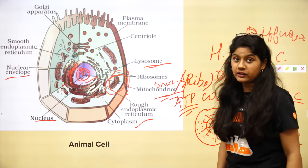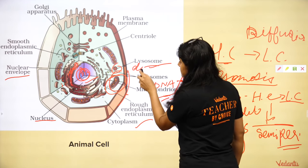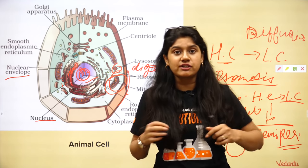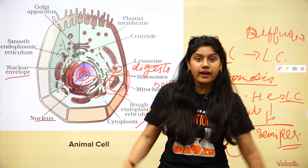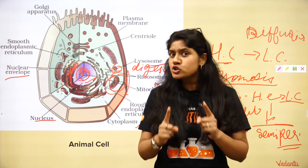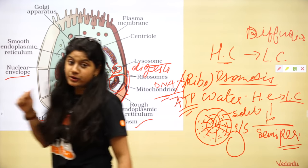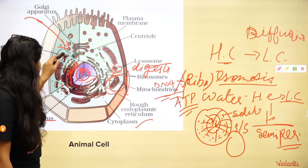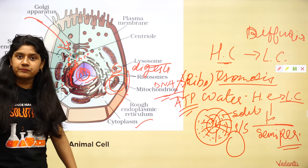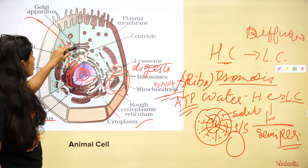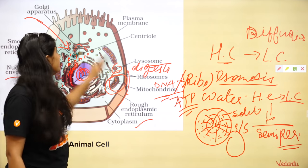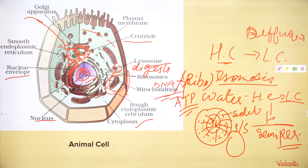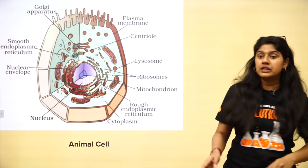Lysosomes are small vesicle bags containing digestive enzymes. These enzymes help in killing germs and maintaining cell conditions. If something is bad with the cell, they burst out — so lysosomes are also called the suicide bags of the cell. The Golgi apparatus helps in transportation of proteins — ER makes them, sends vesicles with enzymes to Golgi, which modifies, packs, and sends them to various parts. Centrioles are two cylindrical structures that help in cell division.